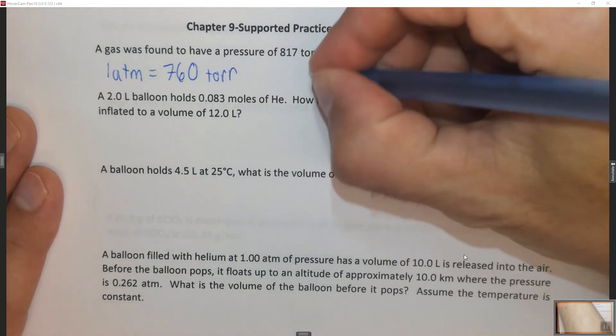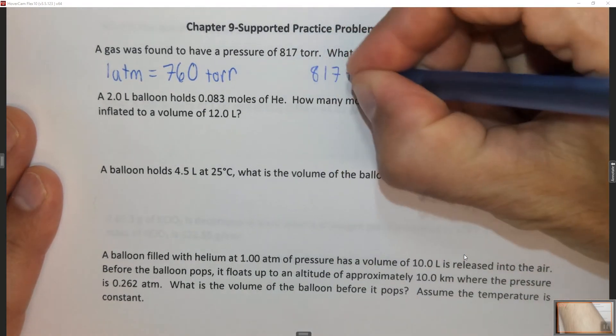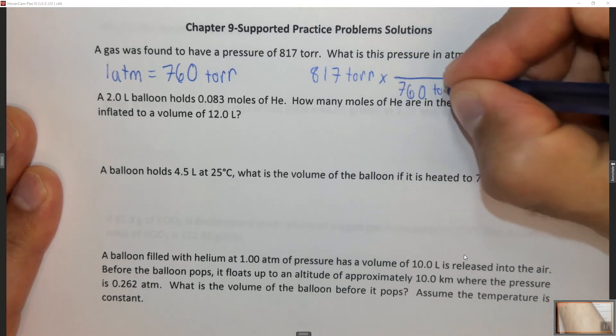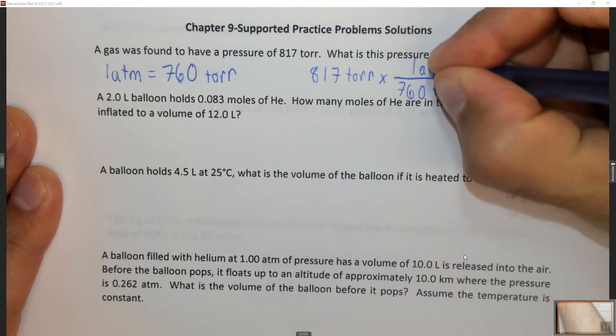We start with our 817 torr times... We want to put the 760 on the bottom and the one atmosphere on the top,